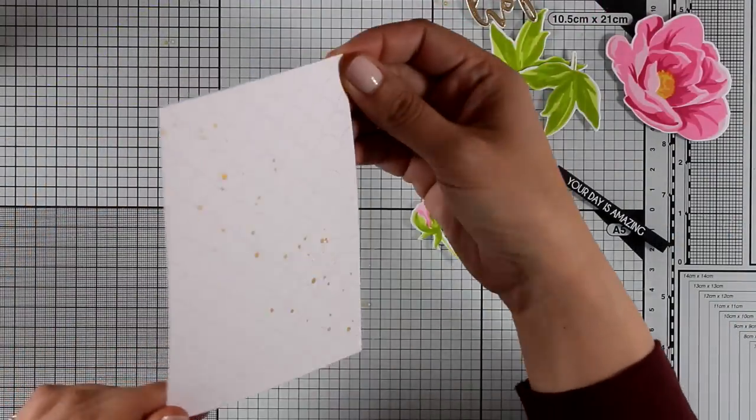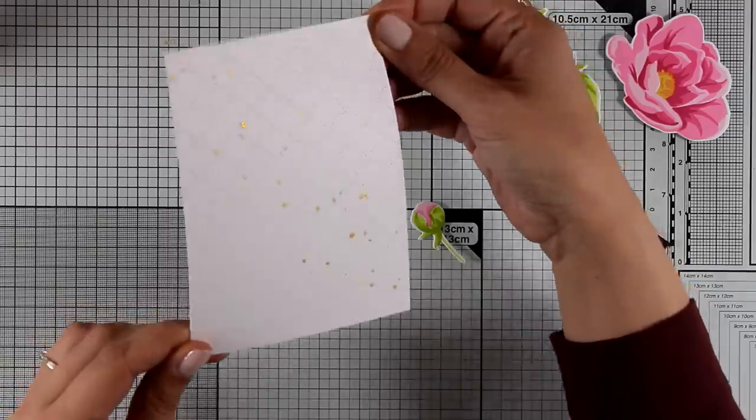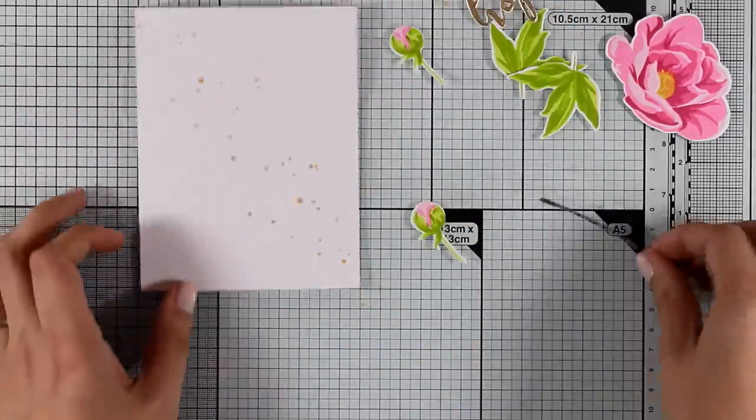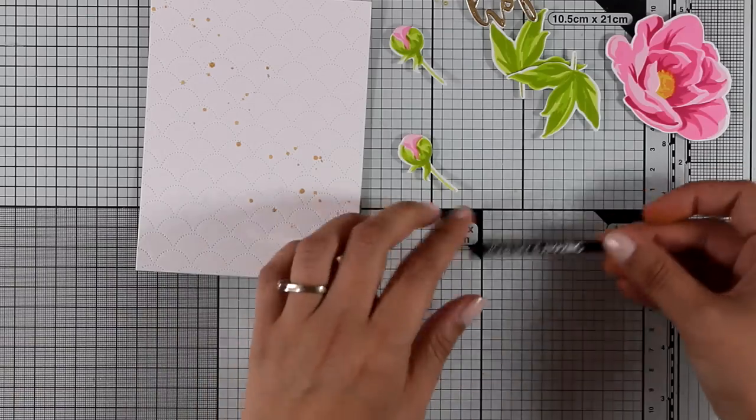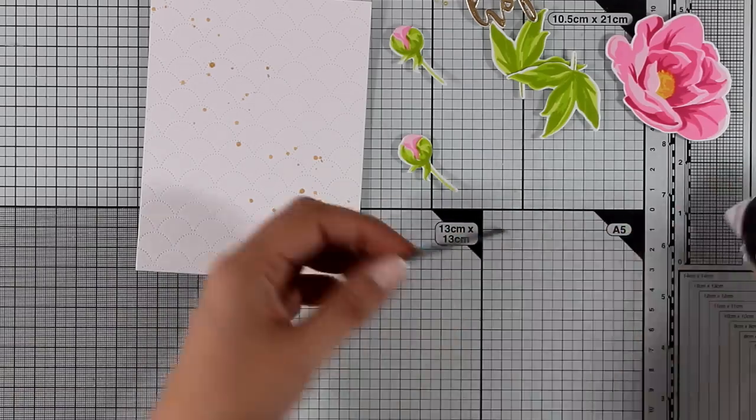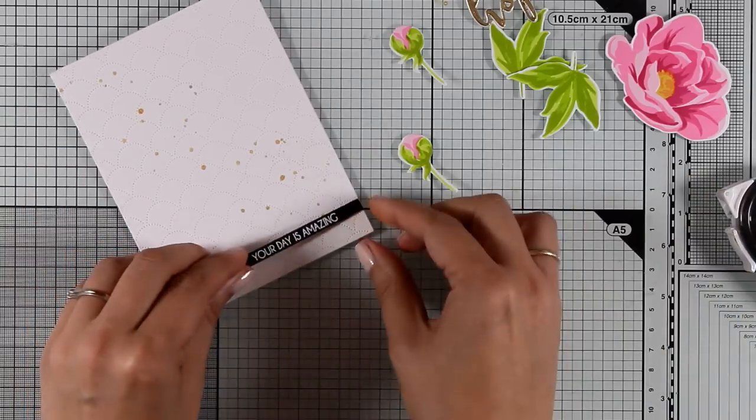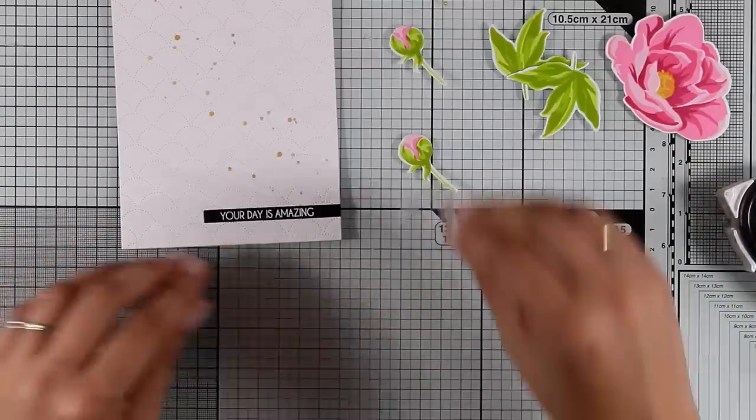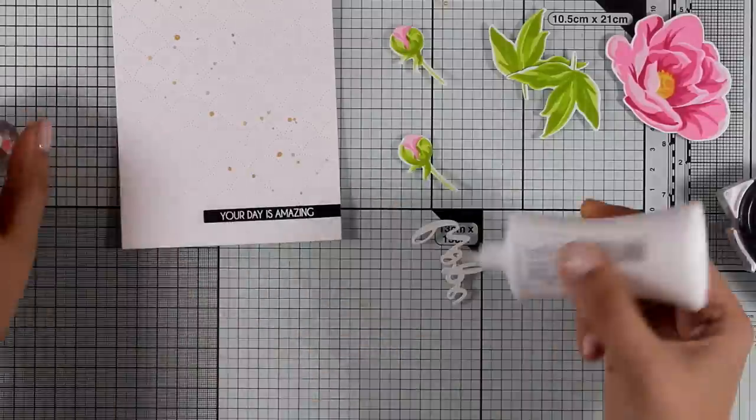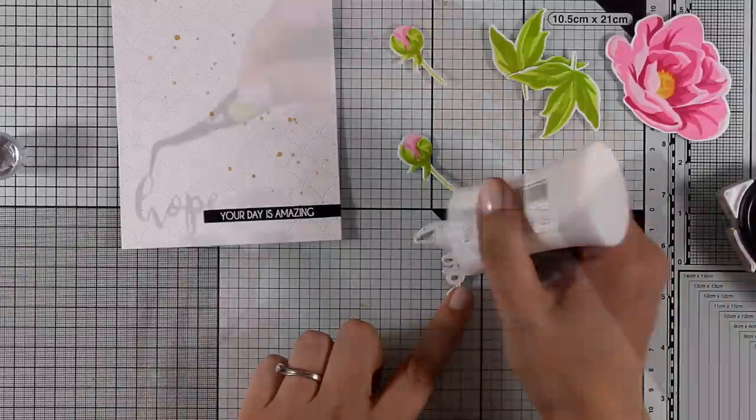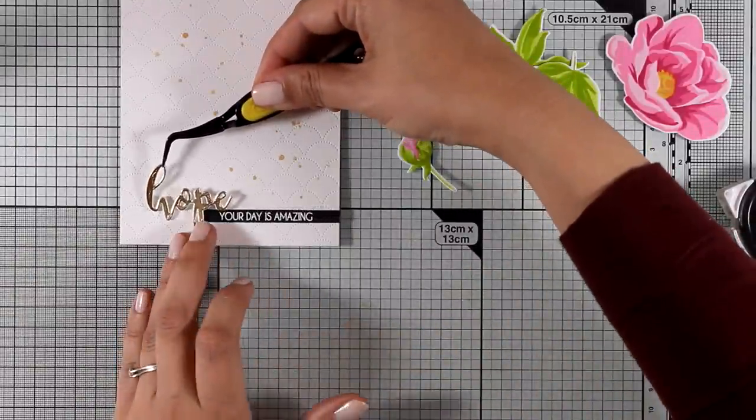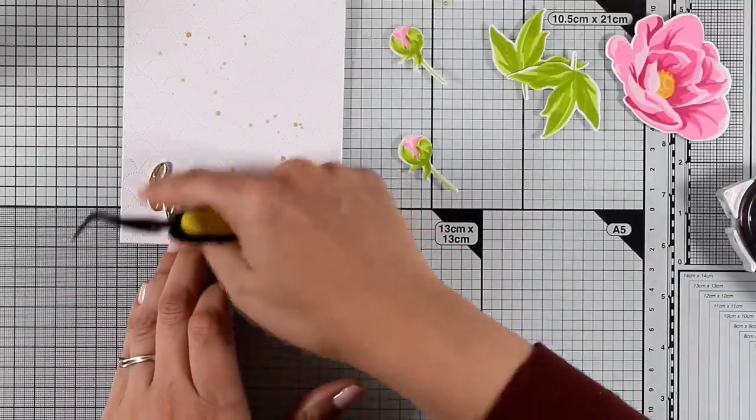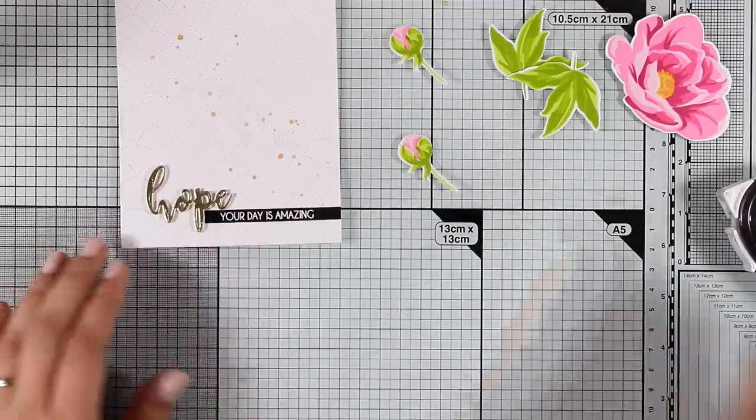And now it's time finally to put everything together. So I'm going to first start with the sentiment. In the stamp set there is one beautiful saying that says your day is amazing. That I have stamped on black cardstock and embossed it with white embossing powder. And I'm going to combine that with the hope word that I have created earlier. So I'm going to nest the word hope just next to this black strip.